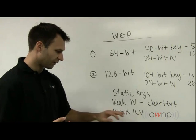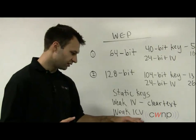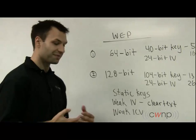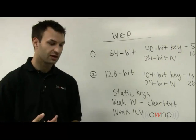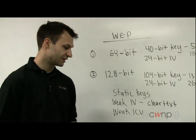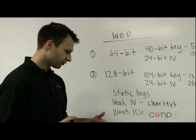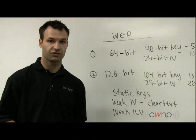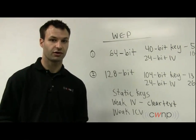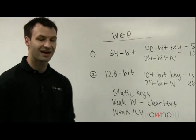And then finally, I want to point out the weak ICV. This is an integrity check value. It's basically a way of ensuring that the message wasn't changed in transit. It's a pretty weak ICV. It's only 32-bit CRC, so it's fairly weak cryptographically speaking. It's easy for bit-flipping attacks or other tampering attacks to occur with such a weak integrity.